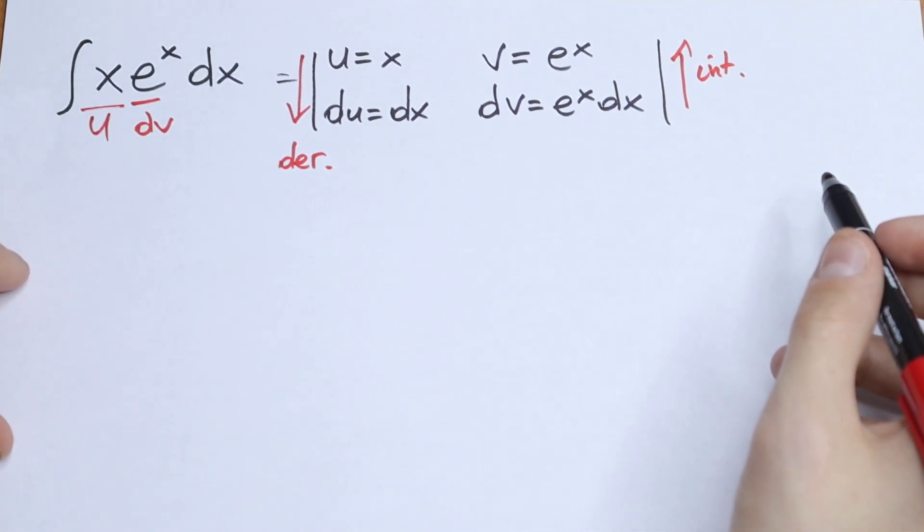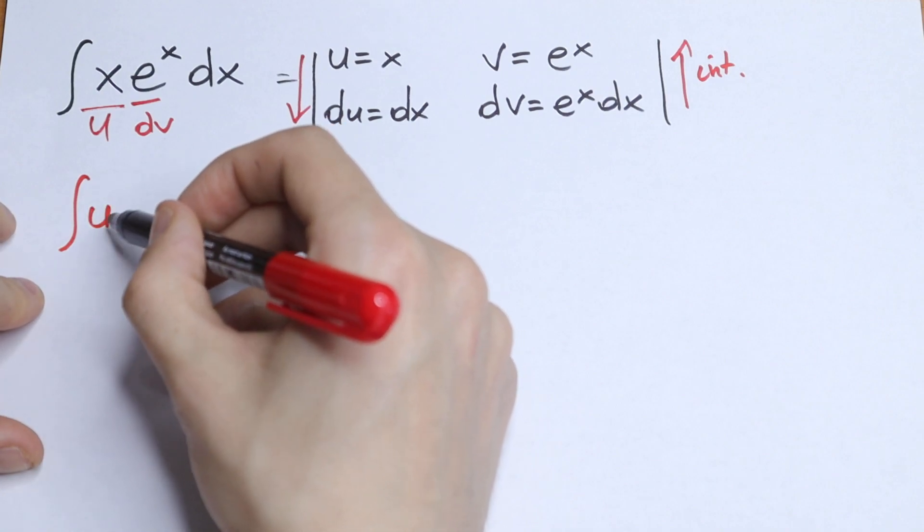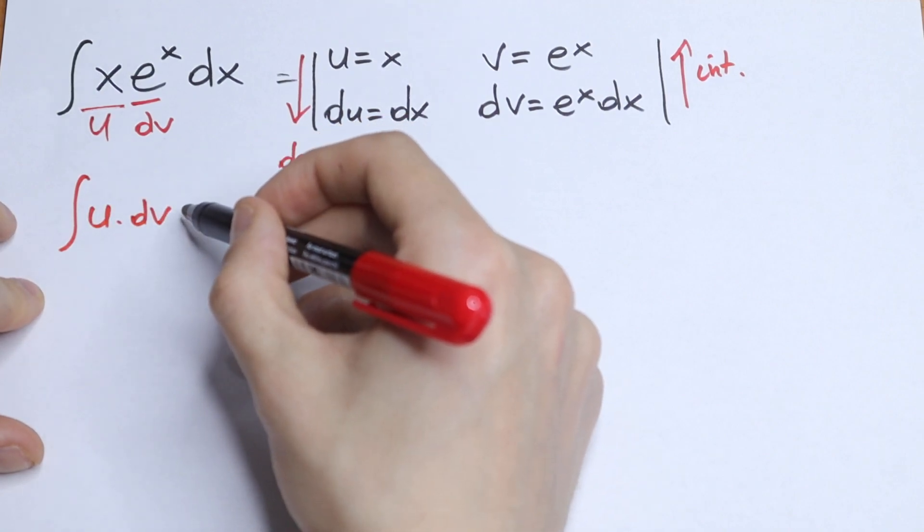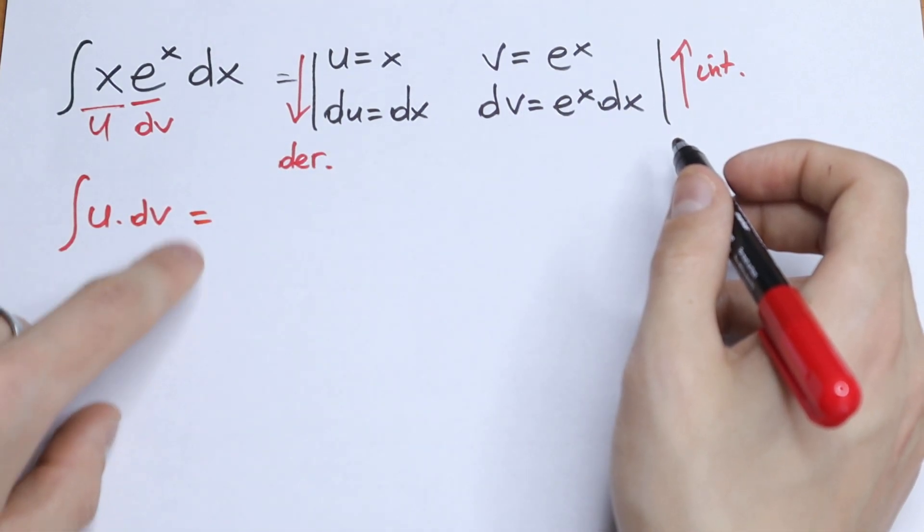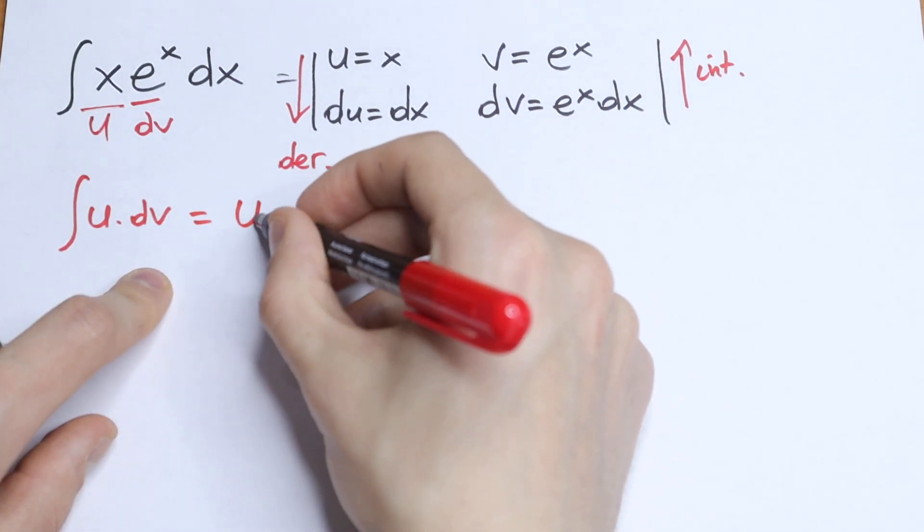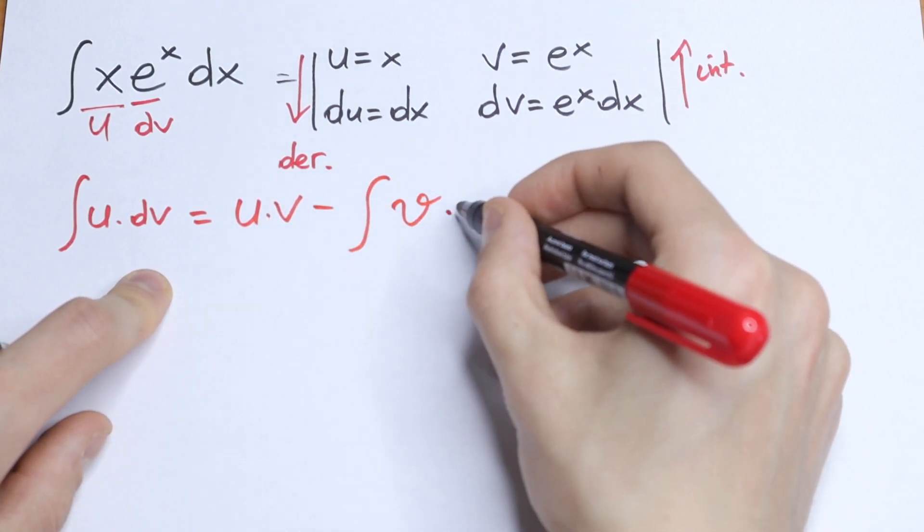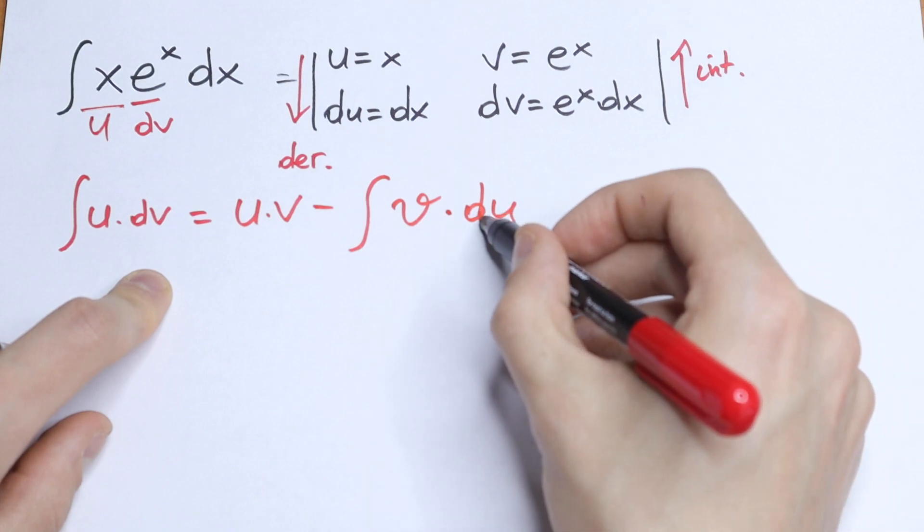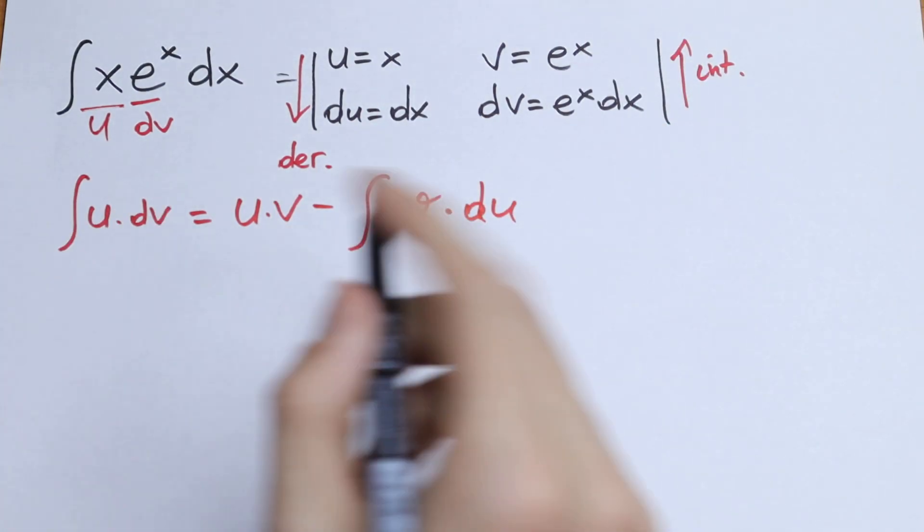So what is the formula? If we have integration by parts, we have situations like u times dv. So we will have that this integral will be equal to u times v minus integral of v times du. So all parts we have right here, so we need to put it in and find this integral.